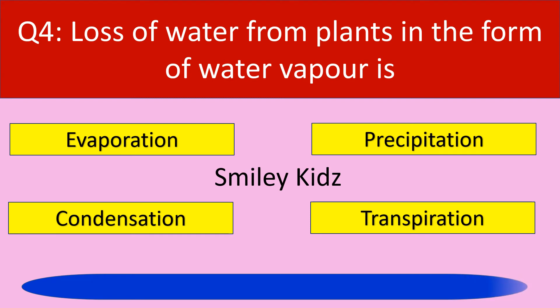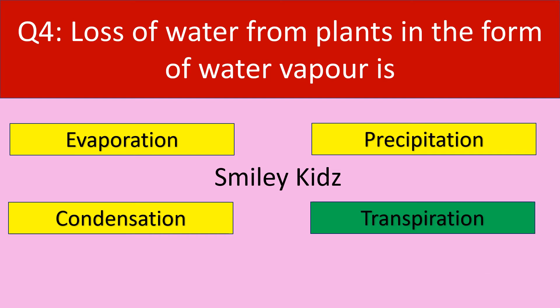Your time is up and the correct answer is transpiration. Transpiration is the process of losing water from plants in the form of water vapor.